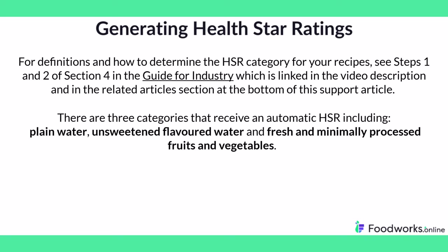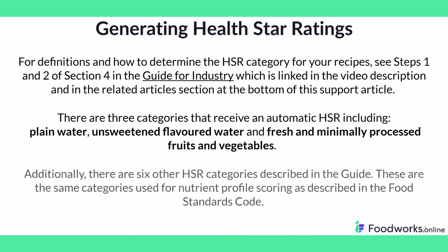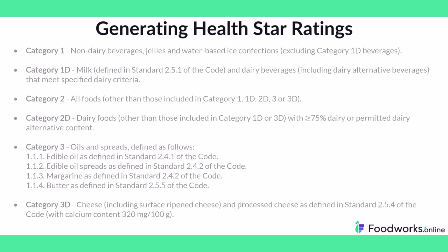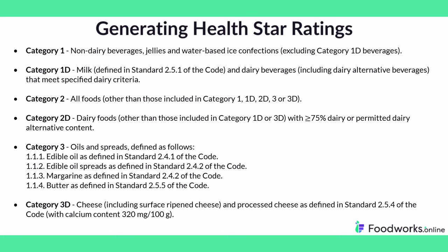To summarize, there are three categories that receive an automatic HSR, including plain water, unsweetened flavored water, and fresh and minimally processed fruits and vegetables. Additionally, there are six other HSR categories described in the guide. These are the same categories used for nutrient profile scoring as described in the food standards code and they are displayed on the screen now.